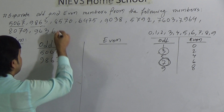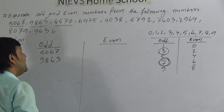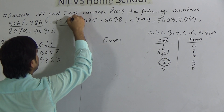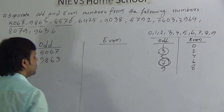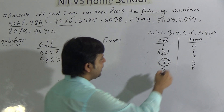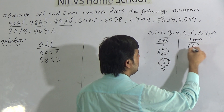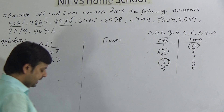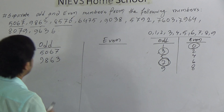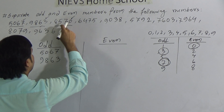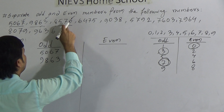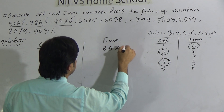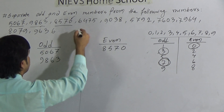Now see the next number: 8570. Here the unit place is 0. Now see where is 0 — 0 is in even. As 0 is in even, the number containing 0 in the unit place must be even. So we write 8570 under even.